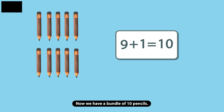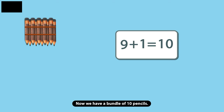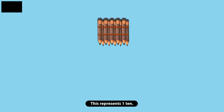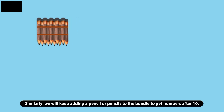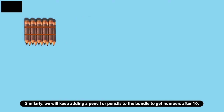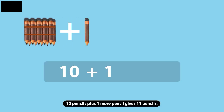Now we have a bundle of 10 pencils. This represents one 10. Similarly, we will keep adding pencils to the bundle to get numbers up to 20. Ten pencils plus 1 more pencil gives 11 pencils.